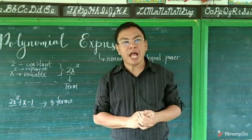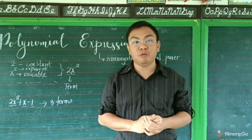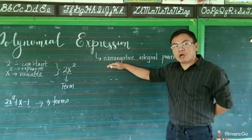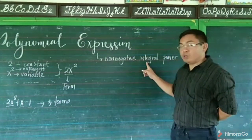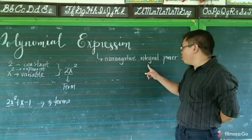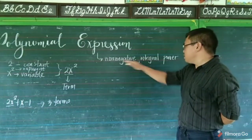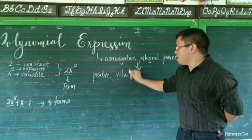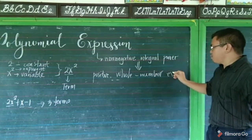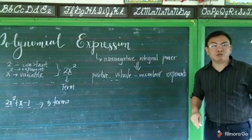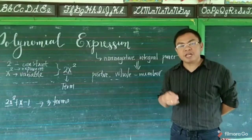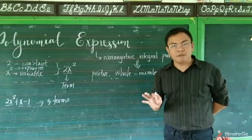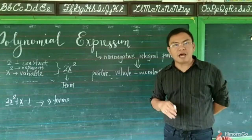There are three important terms that help you identify whether a given expression is a polynomial or not: non-negative integral power. Non-negative means positive whole number exponents. So your clue is to look at the exponents of your variables. If they are positive whole numbers, then the given expressions are polynomial expressions — otherwise, not.